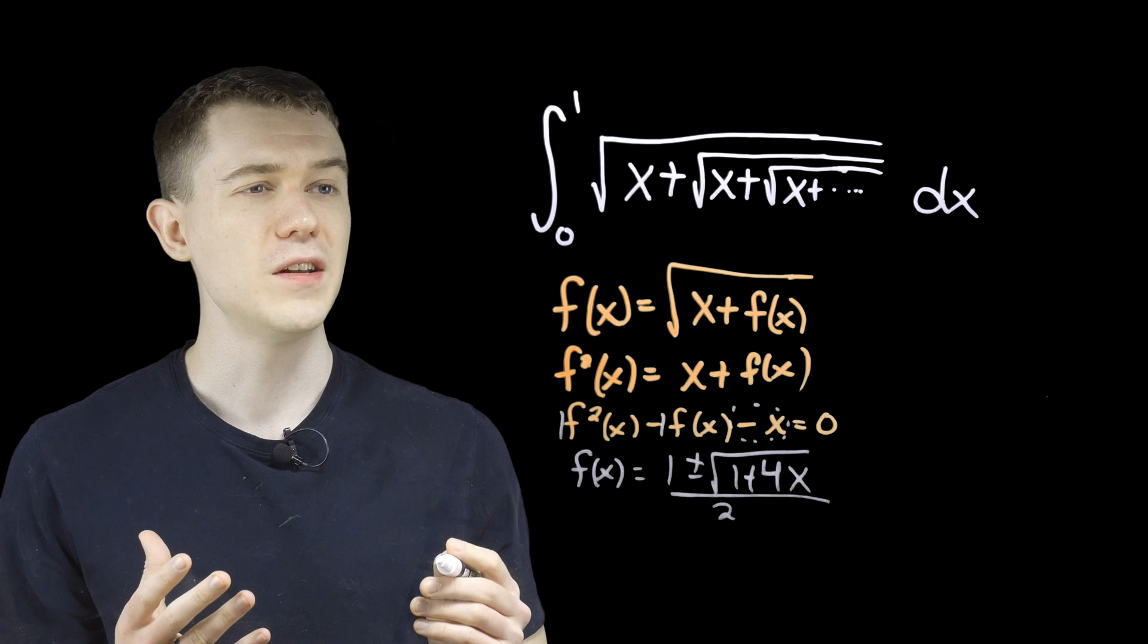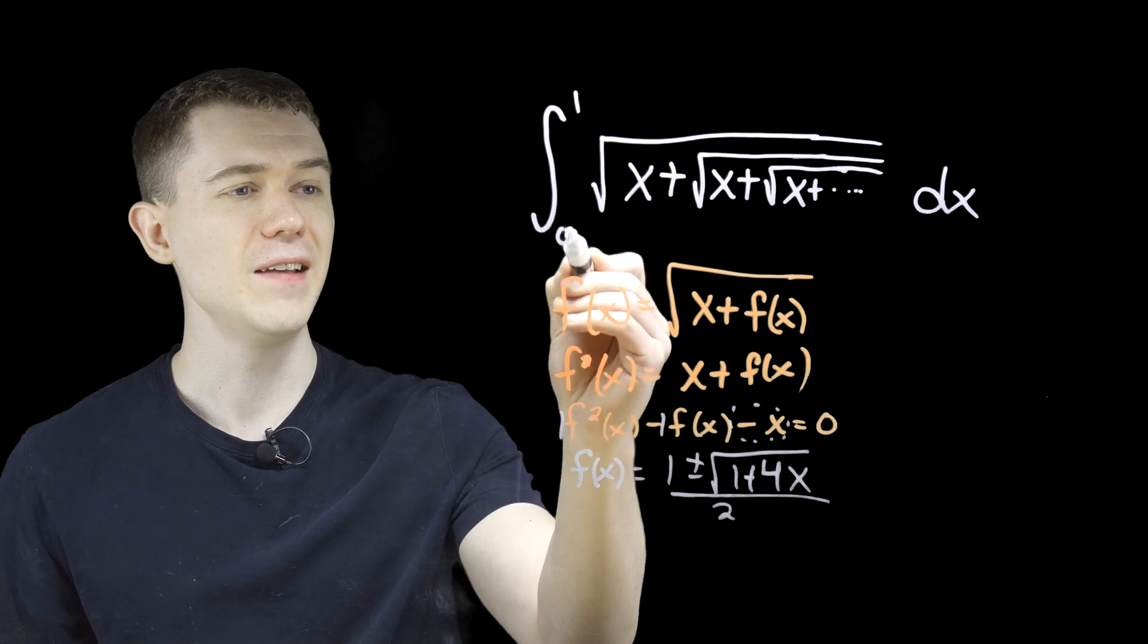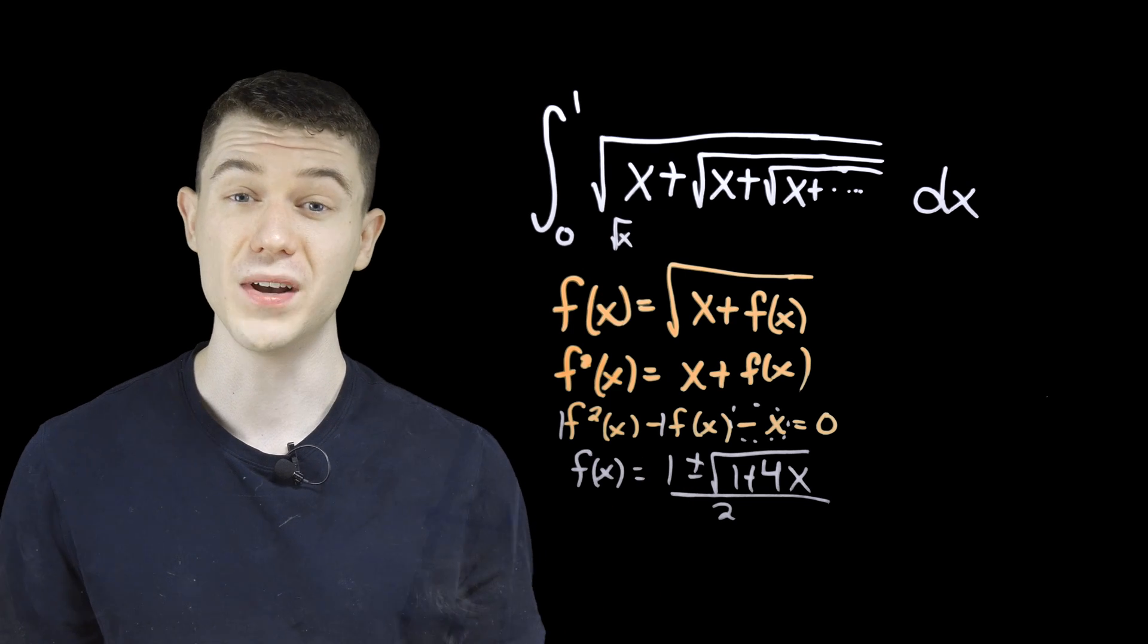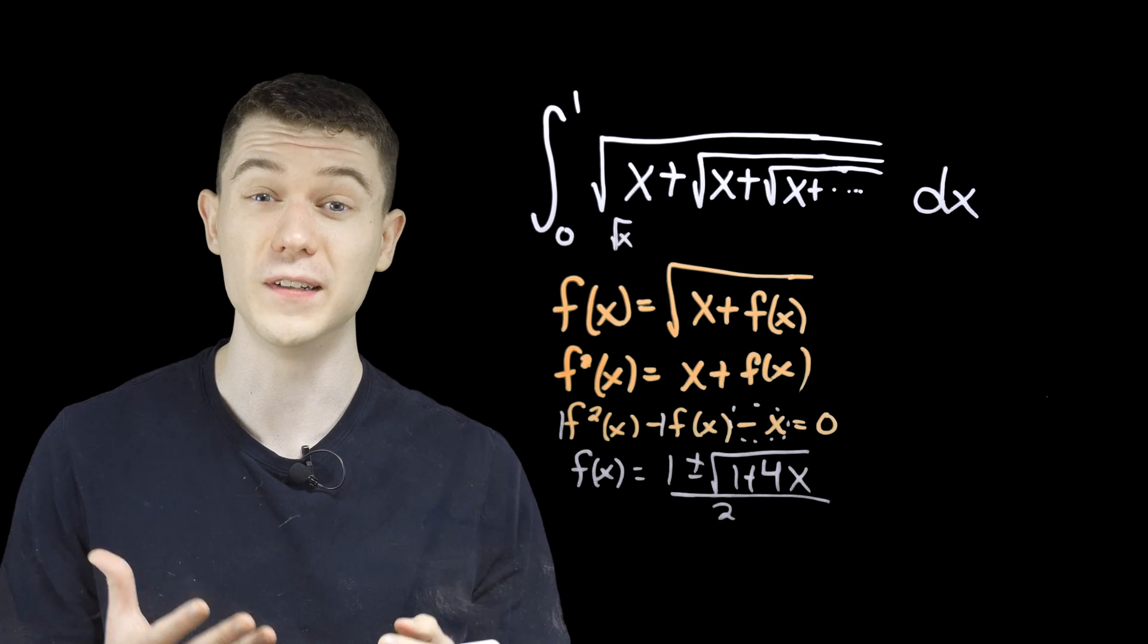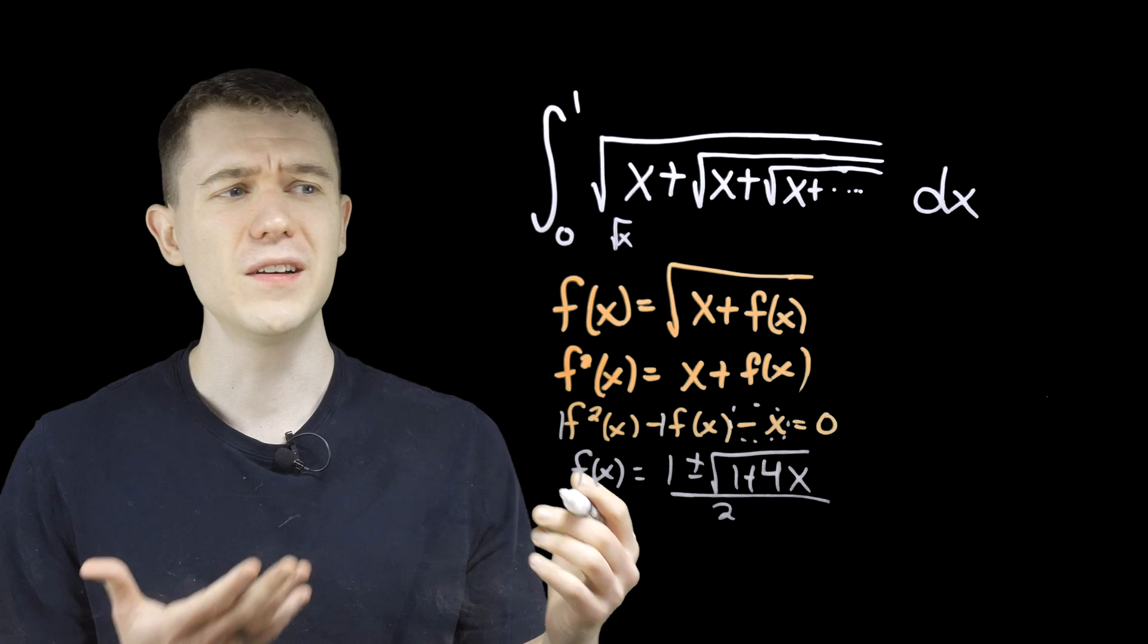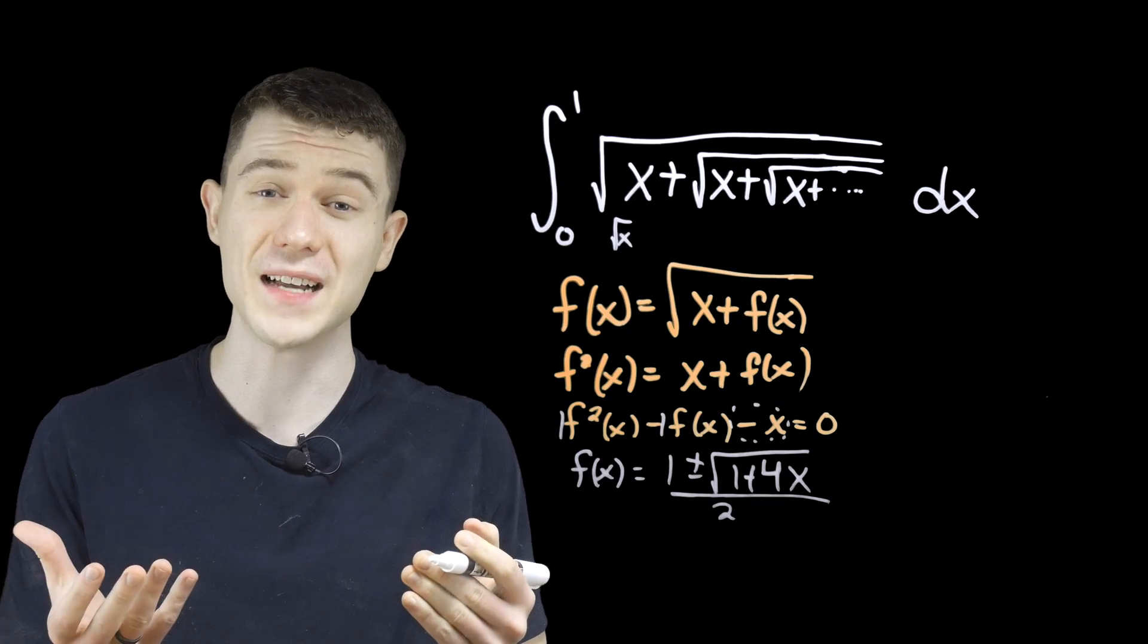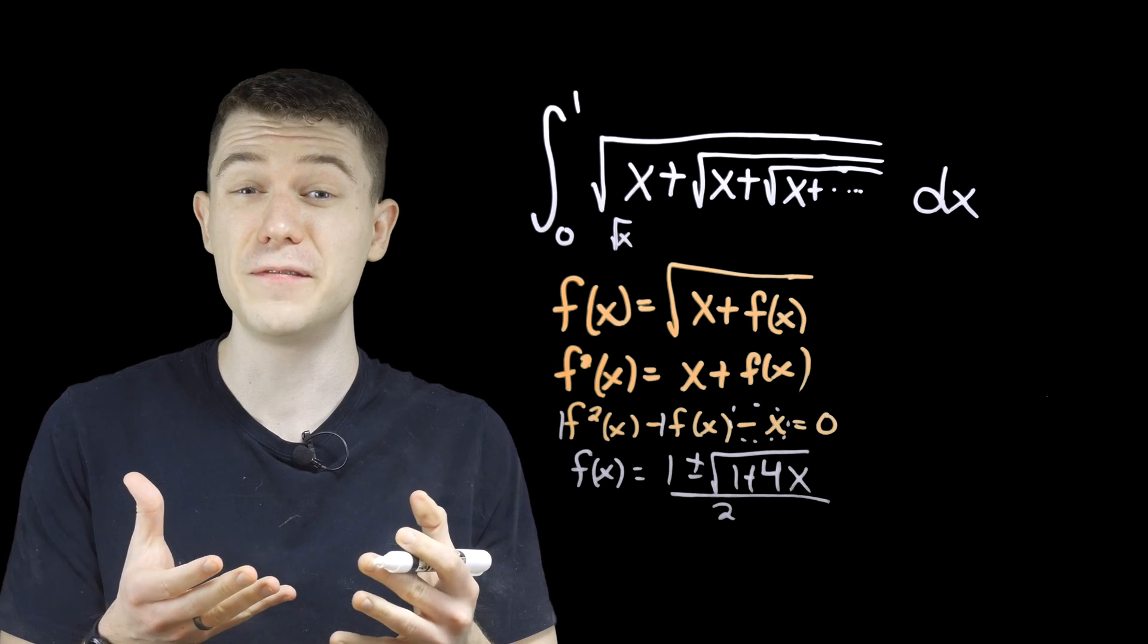and we know that if we plug in any value from zero to one into the square root function, square root of x, it's going to be positive, or at least zero. And we could pretty much assume that if we were to keep nesting these square roots, we'd still get positive things under the square root.